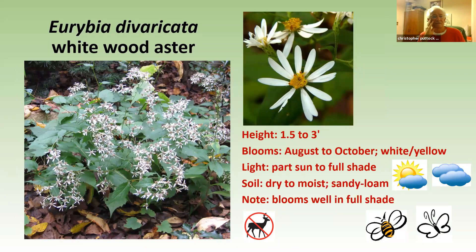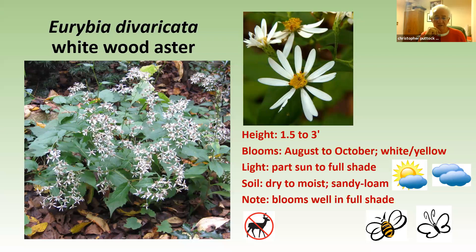The most common Eurybia is Eurybia divaricata — the white wood aster — an excellent species for growing in full shade. It really doesn't like sun at all, though it does grow in part shade. If you go up to Winterthur, around the house this is the species they have as understory covering all the grounds under the trees — absolutely full shade — and it's spectacular. It grows really well and is a great plant for a shaded part of the garden.